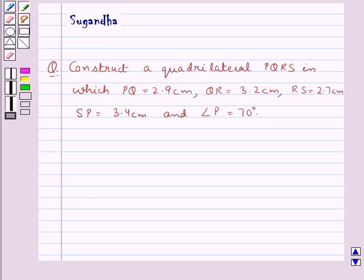Hello and welcome to the session. In this session we discuss the following question which says construct a quadrilateral PQRS in which PQ is equal to 2.9 cm.